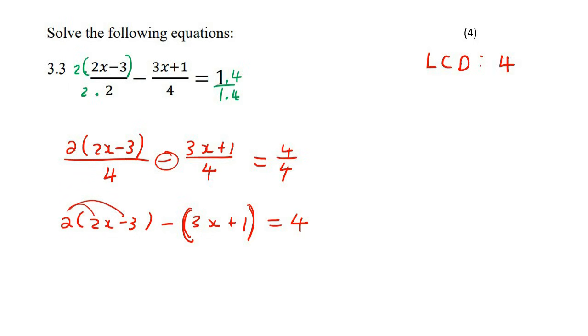So now we're going to multiply the two in, and so we end up with 4x take away six. And then we're going to multiply the negative in, so it becomes negative 3x take away one equals to four.